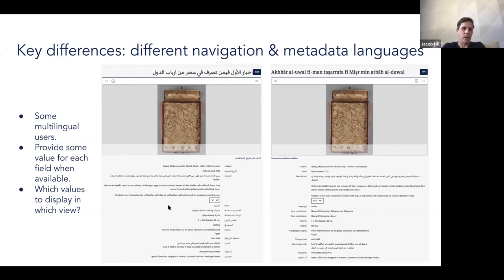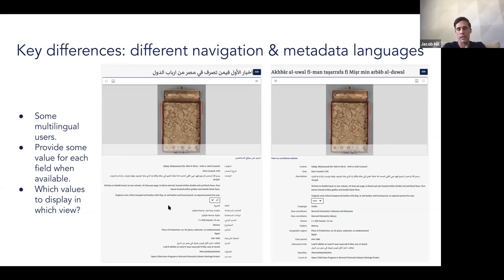The decisions we made were: for an Arabic-speaking audience, if metadata is available in Arabic, that's the first choice. If not, we look for metadata available in another Arabic script, like Persian, under the assumption that if someone reads Arabic they can read Persian even if they won't fully understand it. In English, we make the reverse: if metadata is available in English, we display it in English; if not, we look for another Latin-script language; and if not, we default to whatever we have available.